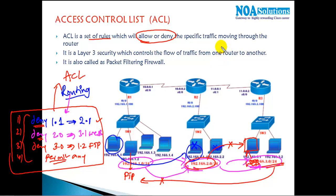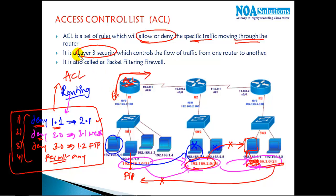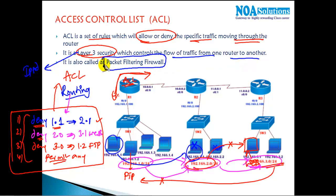ACL controls selected traffic — selected hosts, selected devices, or selected services — moving through the router. We implement ACL on the router, and the traffic has to go through the router. This is called layer 3 security because it filters based on layer 3 IP addresses, controlling the flow of traffic from one network to another. It is also called a packet filtering firewall.